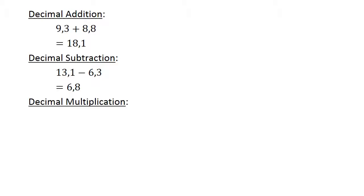Decimal multiplication. 0.5 times 0.003 equals 0.0015.